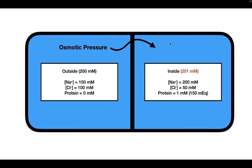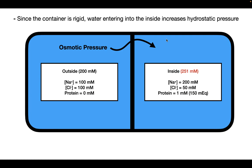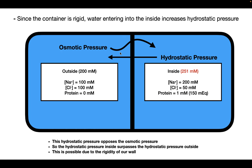The important thing to remember is that the container is rigid, so the volume of the container cannot change. Since the container is rigid, water entering the inside increases the hydrostatic pressure on the inside. This hydrostatic pressure opposes the movement of water and counteracts the osmotic pressure. Because the wall is rigid, it is able to generate a hydrostatic pressure gradient that opposes the movement of water from one side to the other.